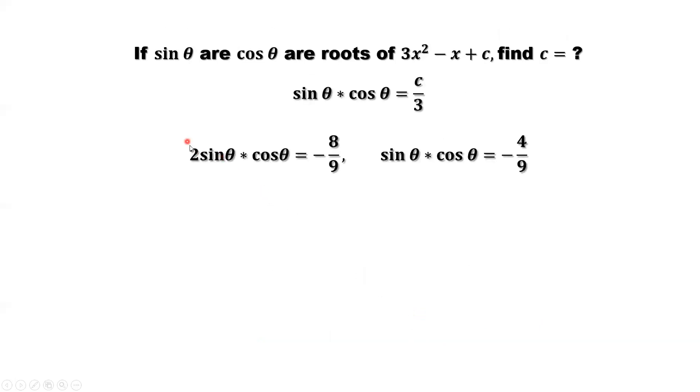Get rid of 2 means both sides we can divide by 2. We have sine theta times cosine theta equals negative 4 over 9.